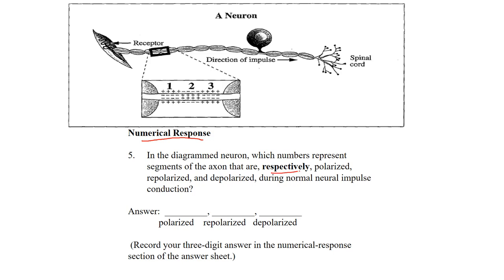They bold 'respectively,' which means they want the answers in the same order as they appear in the question: polarized, repolarized, and depolarized. This is a three-digit answer. Put your numbers right in the actual boxes provided, then transfer them onto the bubble sheet correctly. It is just three digits — you'd be surprised how many times people put four digits on the bubble sheet. Pay attention to how many digits your answer needs to be.